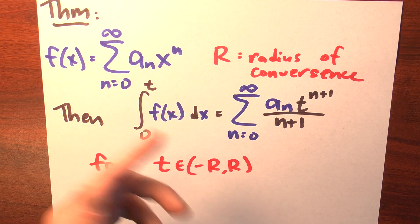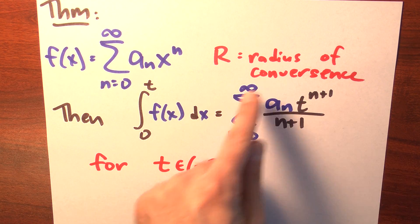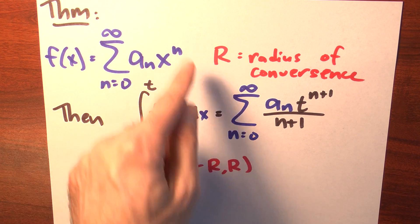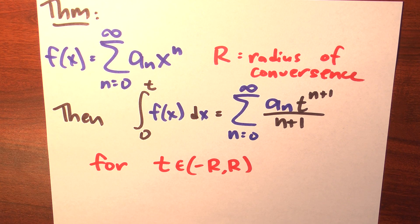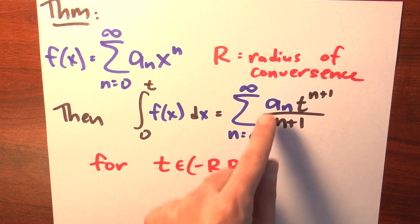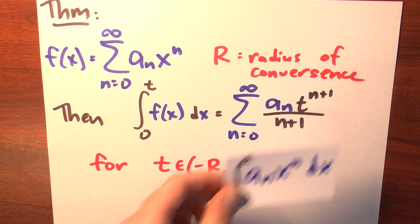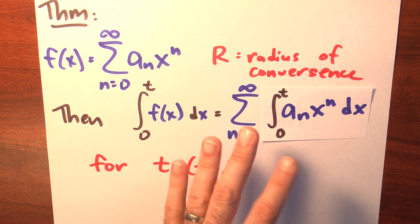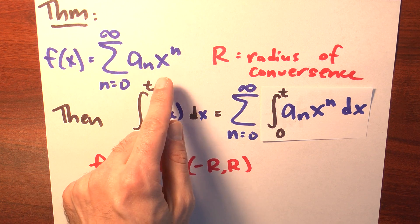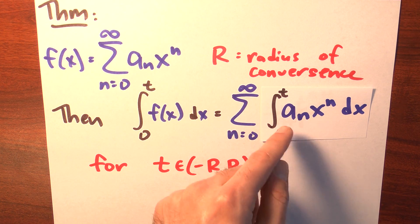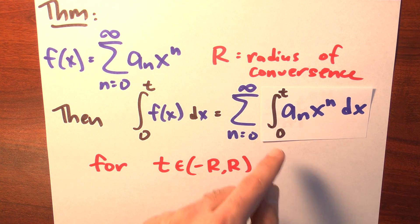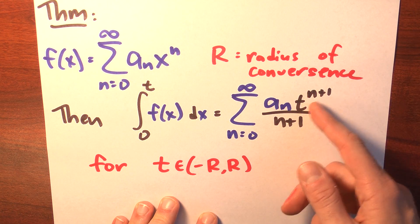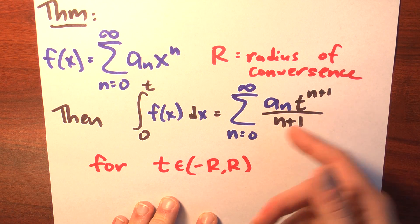To be a little more specific, it turns out the radius of convergence of this integrated series is exactly the same as the radius of convergence of the original series. And if you're wondering where this term comes from, that is exactly what you would get just by integrating the term a sub n times x to the n — the integral of a sub n x to the n dx from 0 to t is a sub n times t to the n plus 1 over n plus 1.